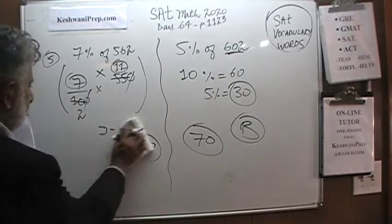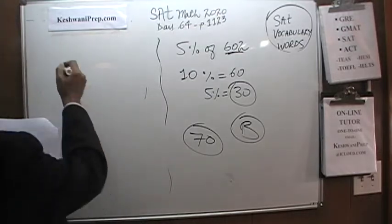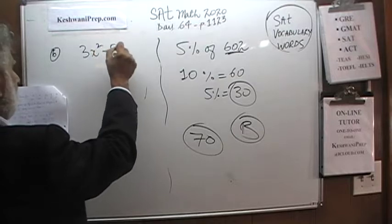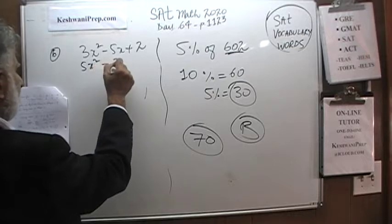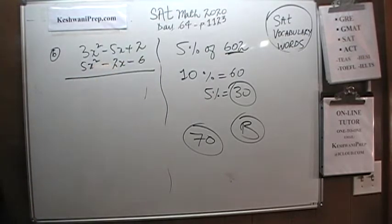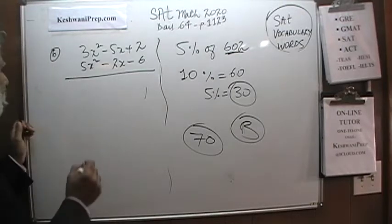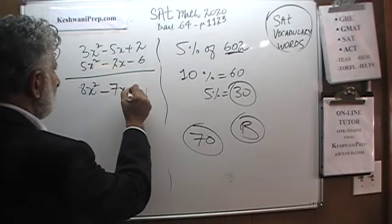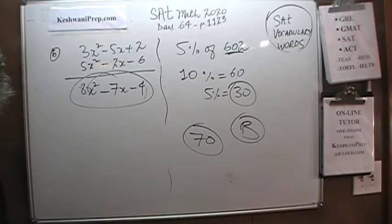Number six. In number six we're given two polynomials: 3x squared minus 5x plus 2 and 5x squared minus 2x minus 6. This is a very simple, very straightforward problem. All they want us to do is add the two polynomials. Let's do that. 3 plus 5 is 8, so 8x squared minus 7x minus 4. There we go, and that is our choice A.